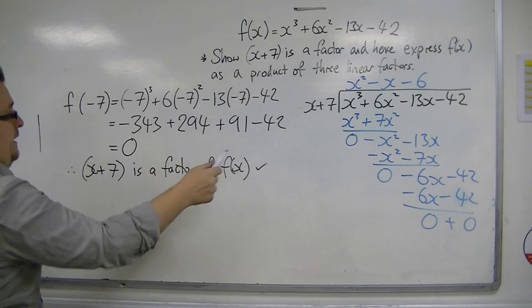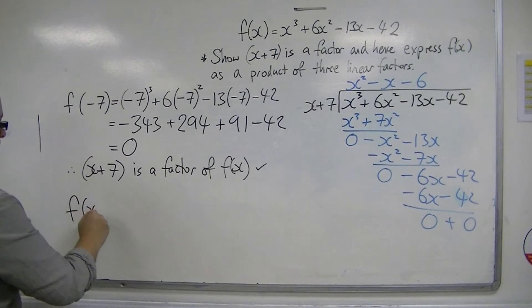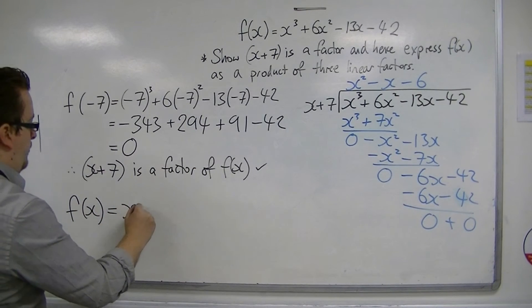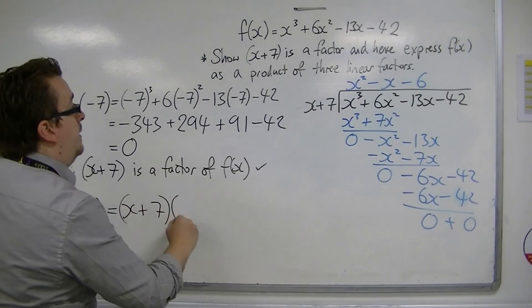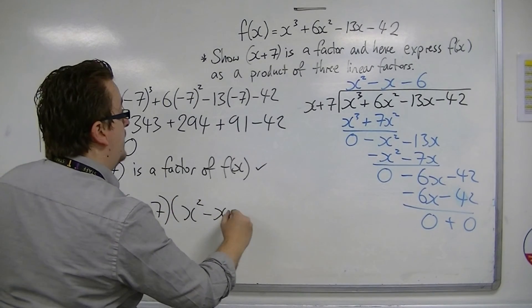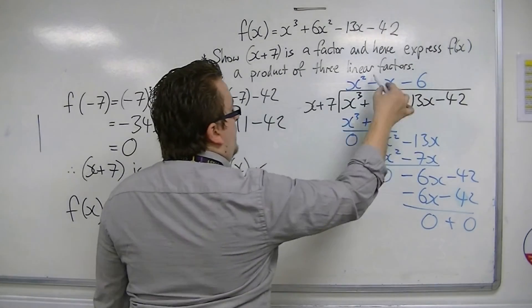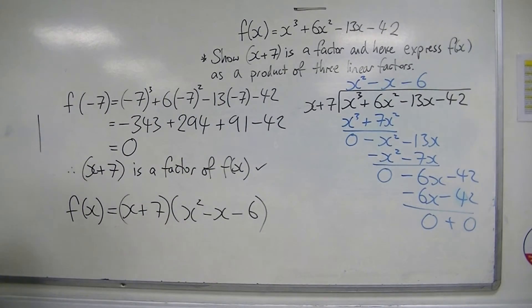So from that we can now say that f of x is equal to x plus 7 times x squared minus x minus 6. That quadratic that's on the top of the division.